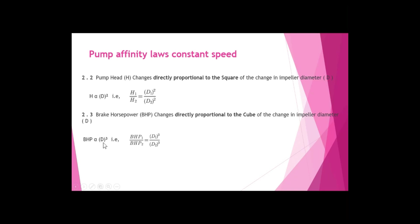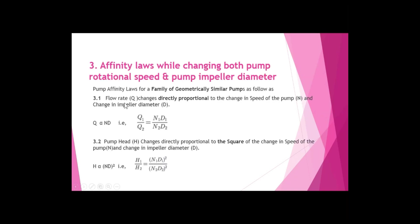For the constant speed law, brake horsepower PHP changes directly proportional to the cube of the change in impeller diameter, so PHP1/PHP2 = D1³/D2³. The third law covers affinity laws while changing both pump rotational speed and pump impeller diameter. To recap: the first law had impeller diameter constant with speed changing; the second law had speed constant with impeller diameter changing; and the third law is where both pump speed and pump impeller diameter change.